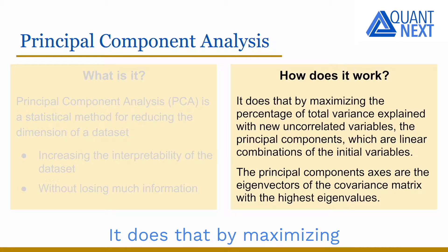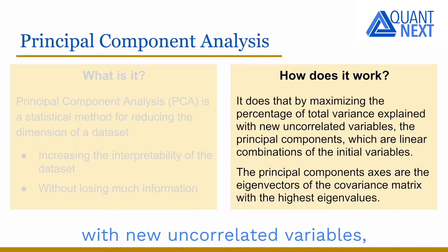It does that by maximizing the percentage of total variance which is explained with new uncorrelated variables, the Principal Components, which are linear combinations of the initial variables. The Principal Component's axes, or coordinates through the initial dataset, are the eigenvectors of the covariance matrix with the highest eigenvalues.